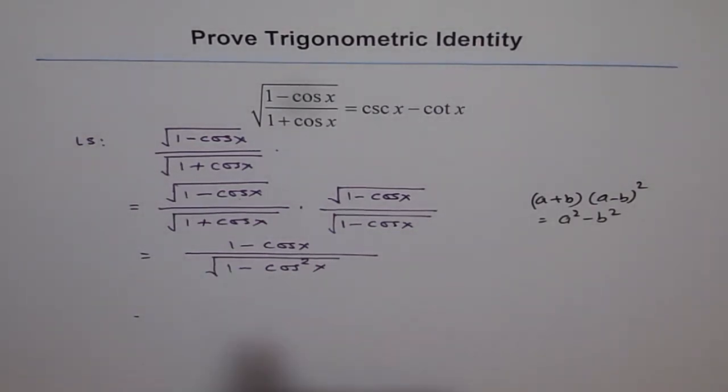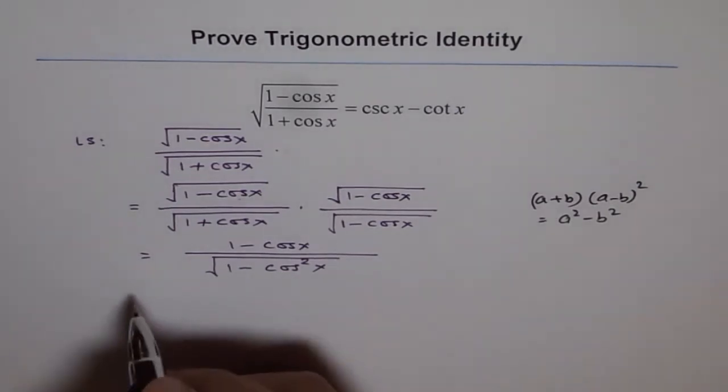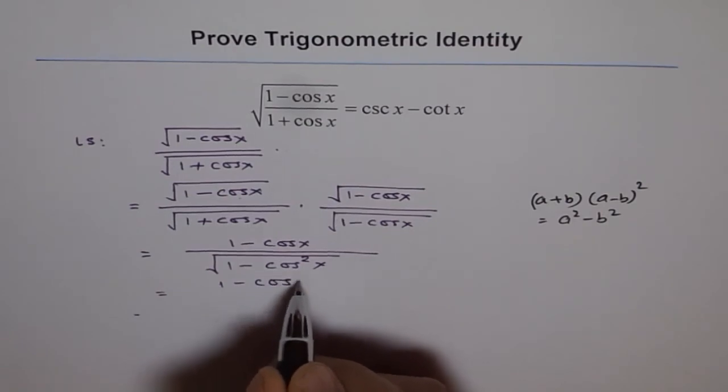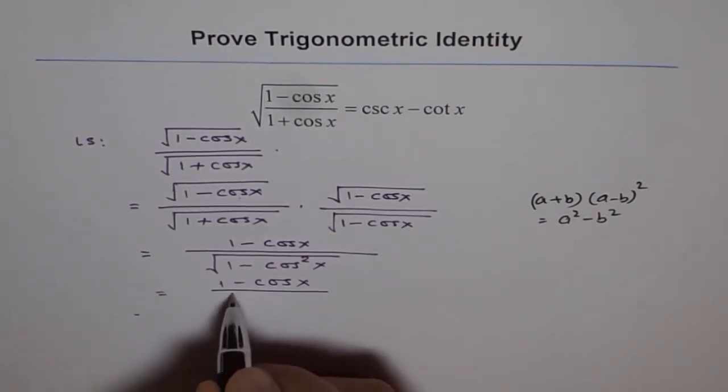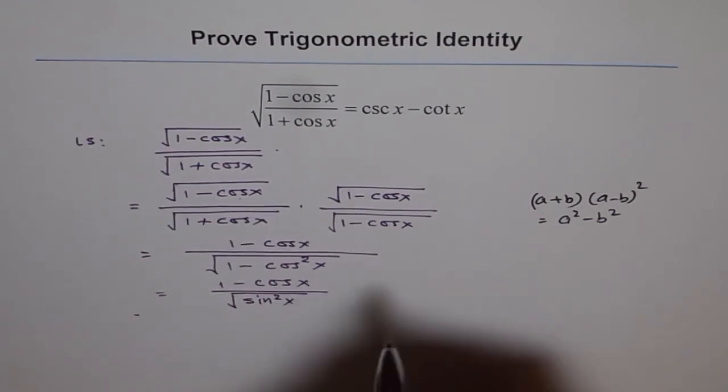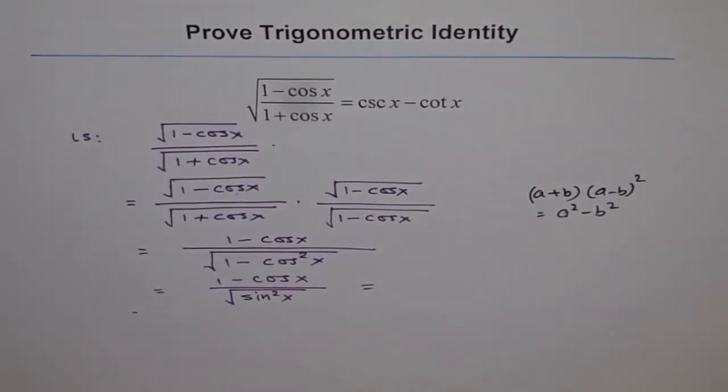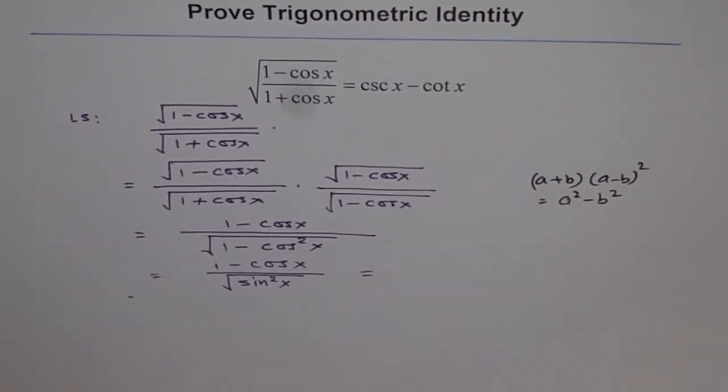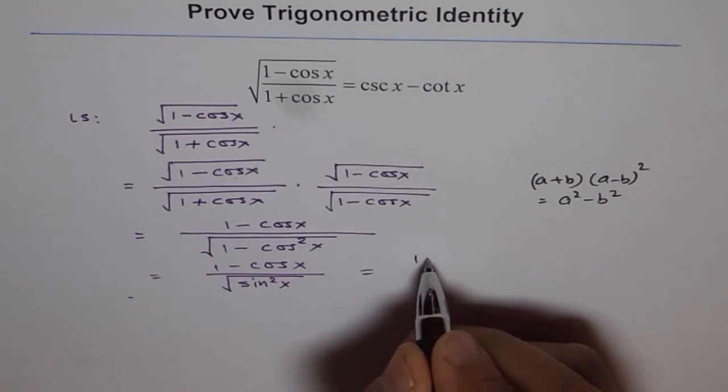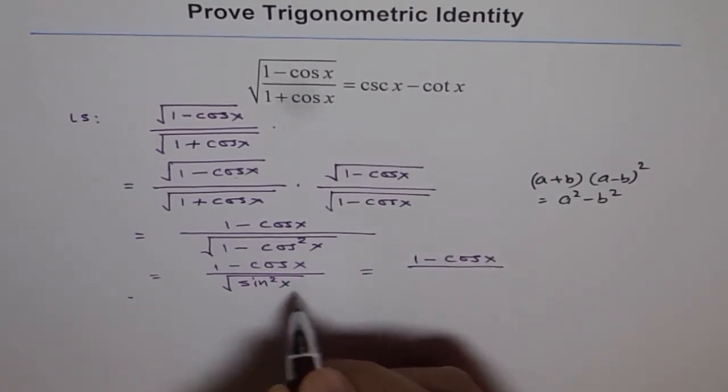Now 1 minus cos square x is sine square x, so I can write this as 1 minus cos x divided by square root of sine square x. Now this could be written as 1 minus cos x divided by sine x.